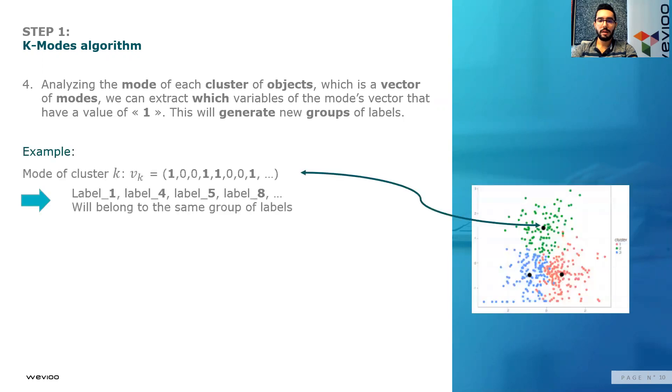I will illustrate it more with this example. If the generated clusters are the following three, and we look at the mode of cluster one, the green one, the mode of this cluster is the following vector. Then we will be able to say that label one, label four, label five, and label eight can belong to the same group of labels.